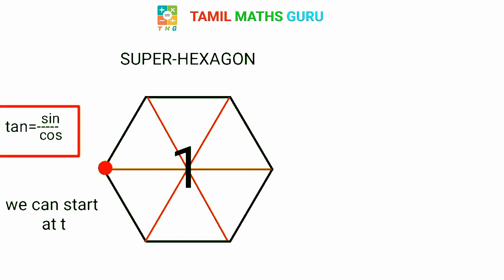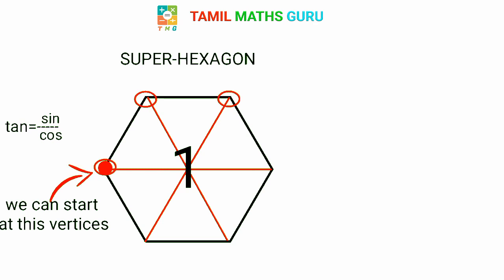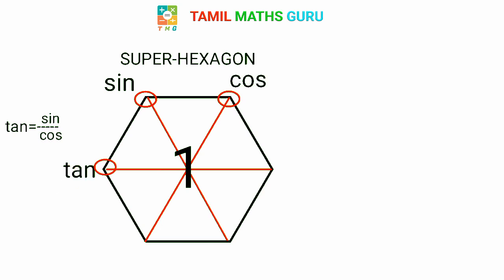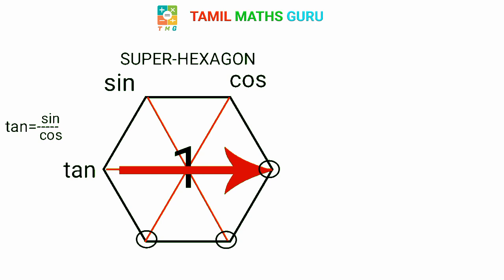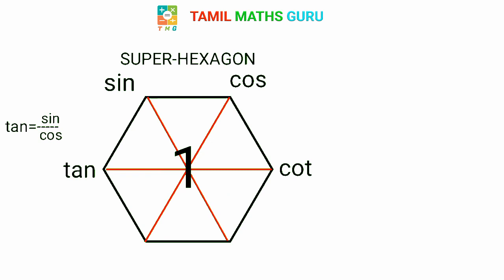Tan is equal to sin by cos. The starting point arrow — tan is equal to sin by cos clockwise. For the remaining three vertices, tan is opposite, so we use cot.